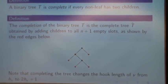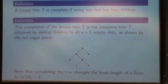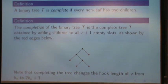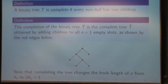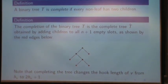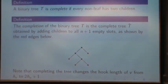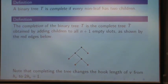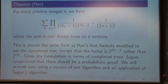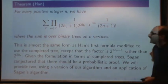Note from this algorithm, completing a tree changes the hook length from H sub v to 2H sub v plus 1, because a tree with n vertices has n plus 1 slots to put children in. So, here's Han's second formula.